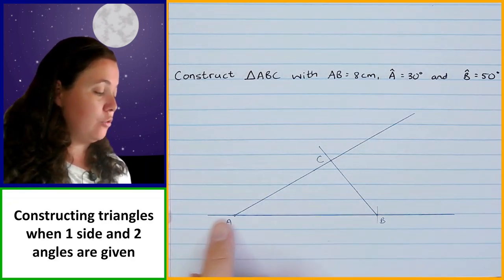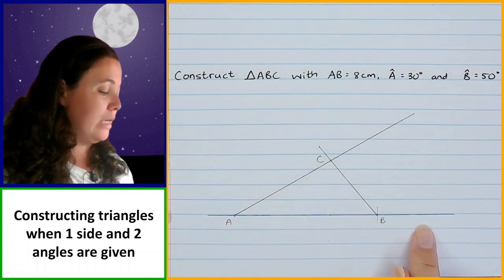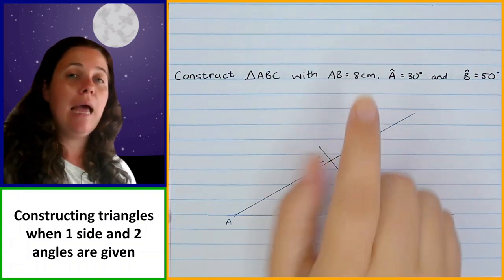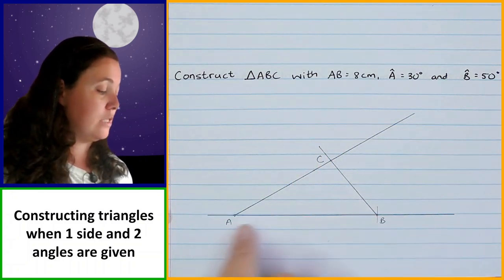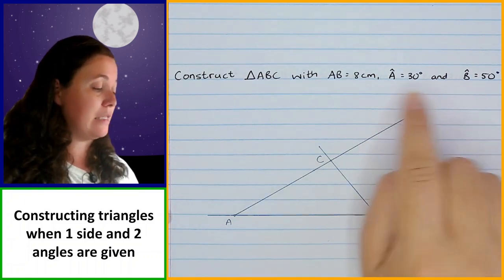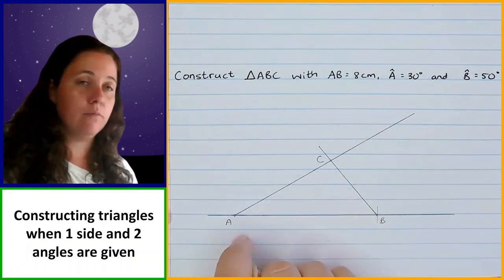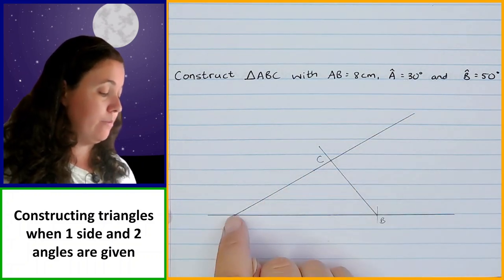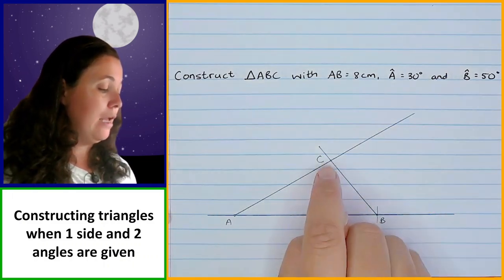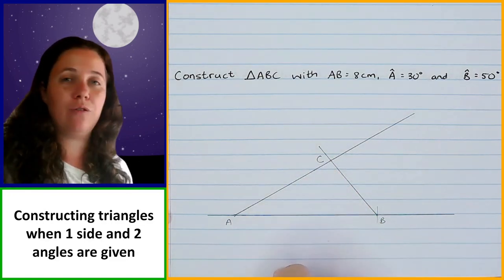Just to recap: we started in the same way by drawing a line, marking off A, and using our compass to measure AB and mark off B with an arc. Then we use our protractor to measure angle A and draw a line from point A in that direction, then measure angle B and draw a line from point B in that direction. We find where those two lines intersect and that is point C, giving us triangle ABC.